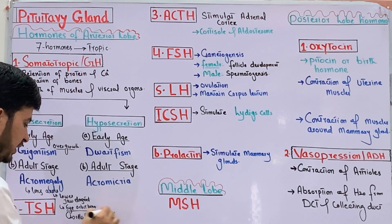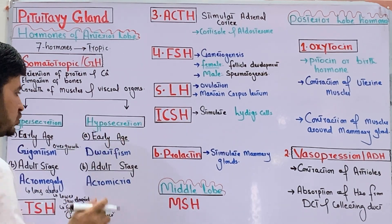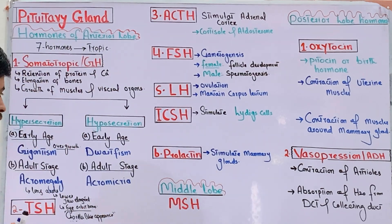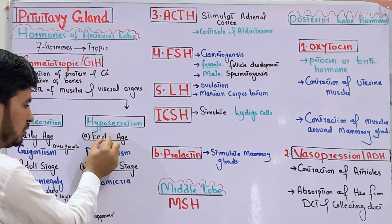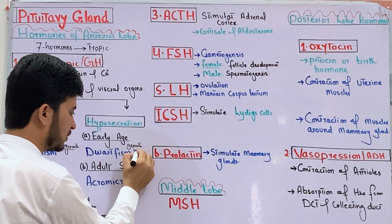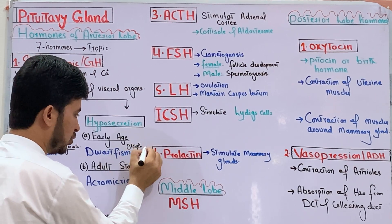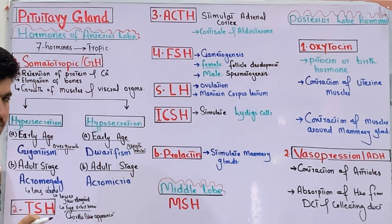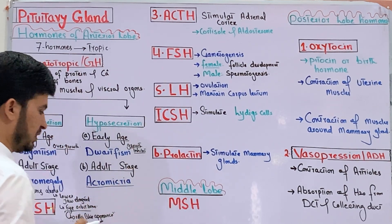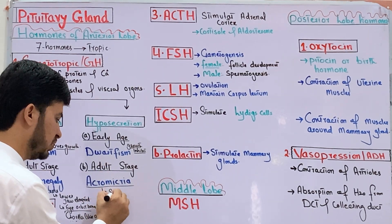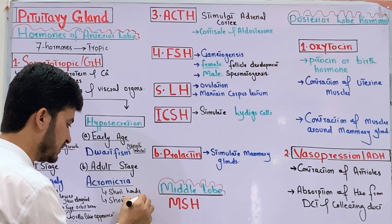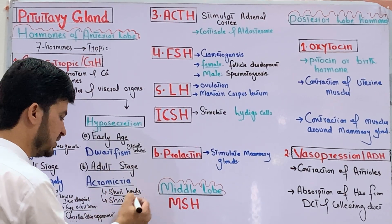Hyposecretion of growth hormone at an early age inhibits growth and causes dwarfism. In adults, hyposecretion causes acromicria — a condition where the individual has short hands and short arms due to lack of normal growth.